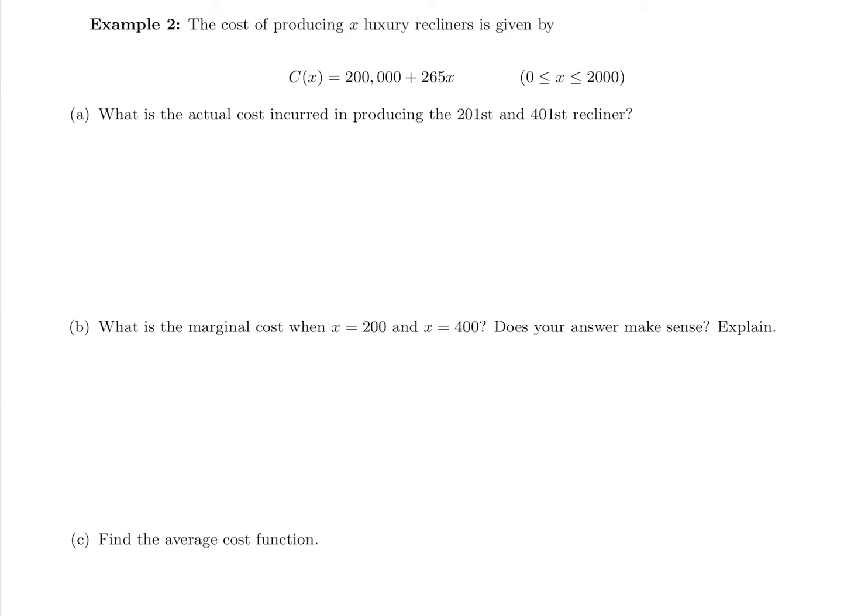Here we have the cost of producing x luxury recliners given by C(x). So C(x) stands for total cost for producing x luxury recliners. We're given a domain we need to stick with, x values between 0 and 2000. We're not going to suggest they make 5 billion of something, they're only capable of making between 0 and 2000 of these luxury recliners.